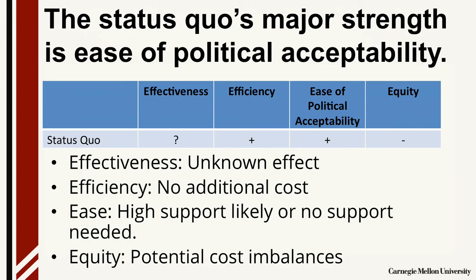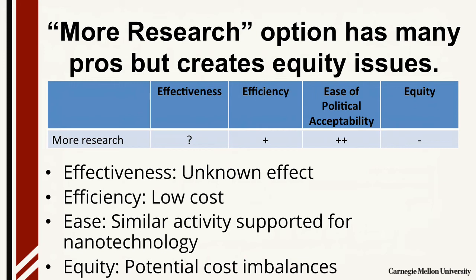This then leads to a summary assessment for all the criteria. Here is an assessment of the status quo situation where the major strength of this policy option is its ease of political acceptability. So although its effectiveness is unknown and people may still be affected by the particulates, it's likely to be approved, particularly as no additional cost is involved. This same process continues for the second option — more research — which has unknown effectiveness but low cost for implementation. The policy is likely to have high ease in political acceptance because of a similar activity that was supported for nanotechnology that proved successful for that emerging industry. In addition, it is likely to have the support of non-governmental organizations who are concerned about the impact of 3D printing. More research might not be equitable, however, as people might still be impacted by the particulate matter while the research is being conducted, which may take a number of years.